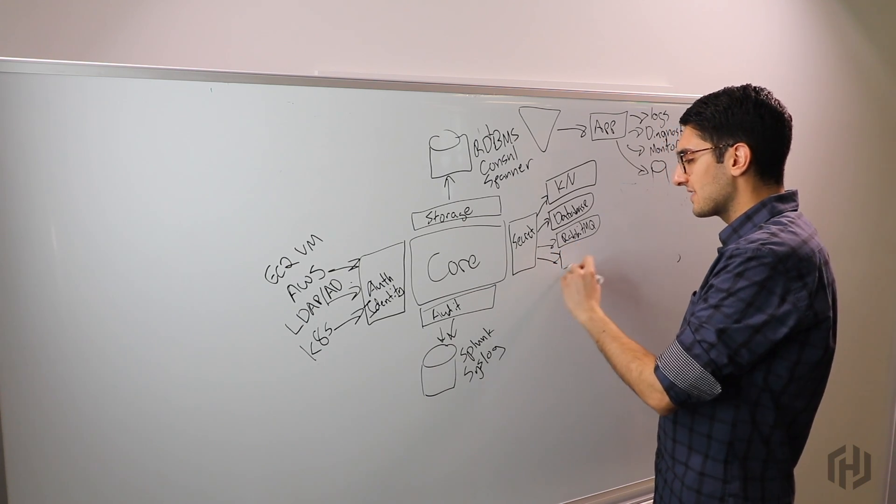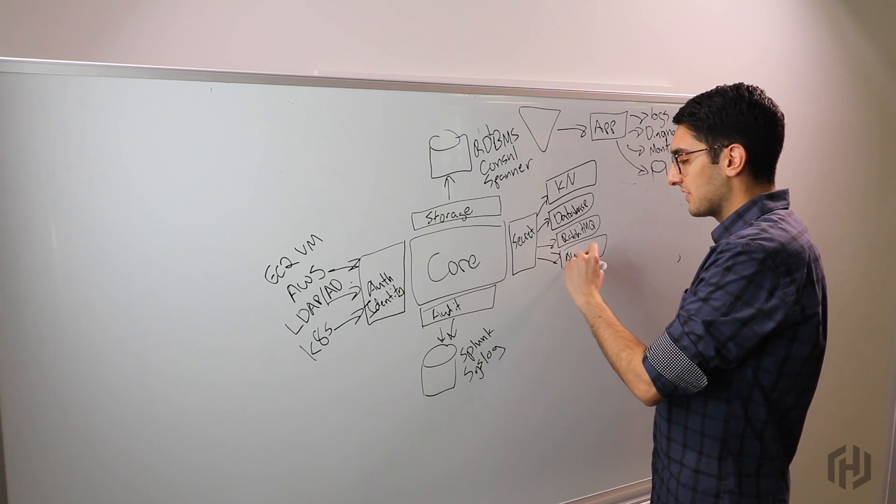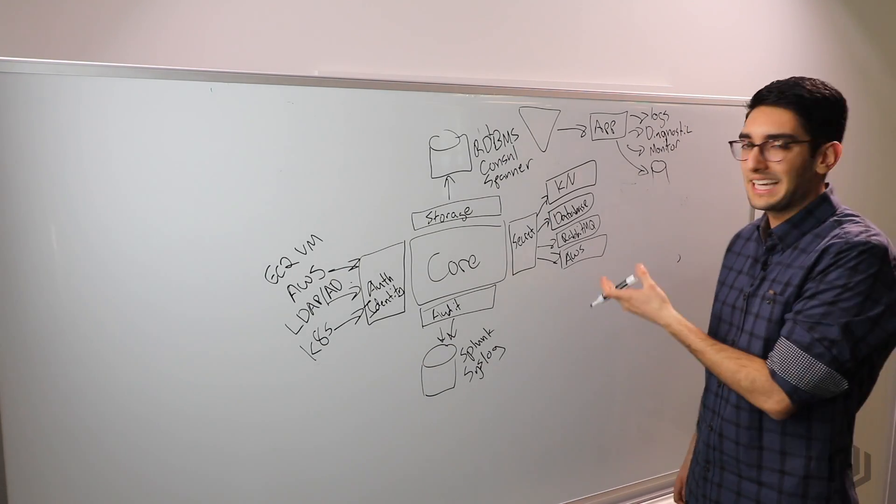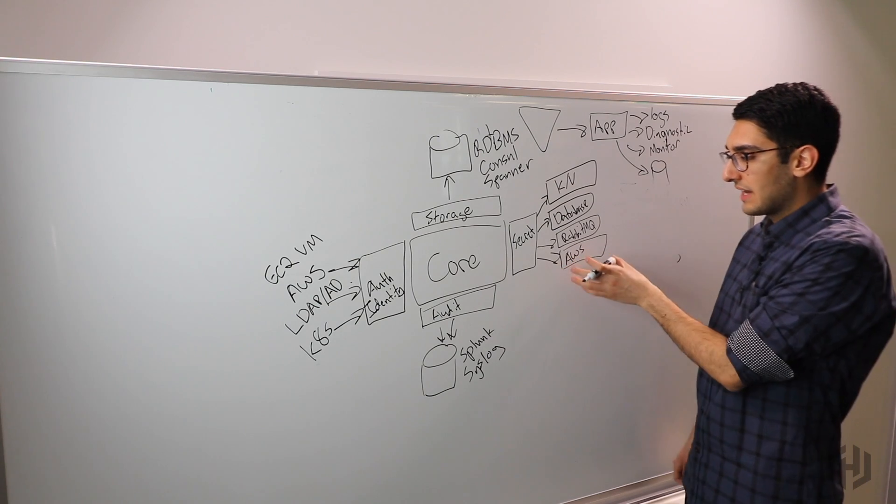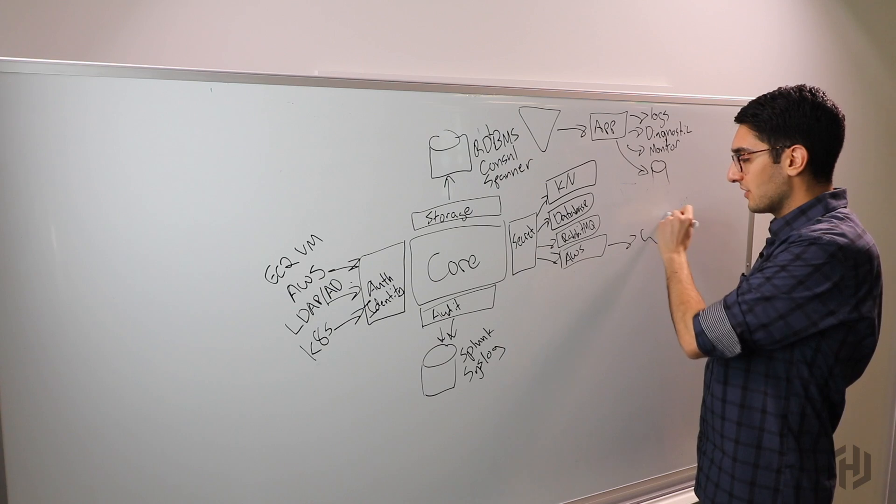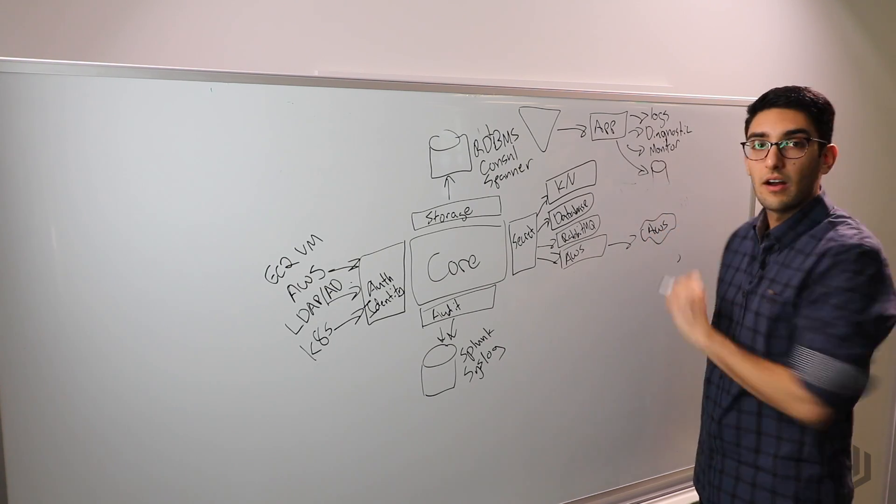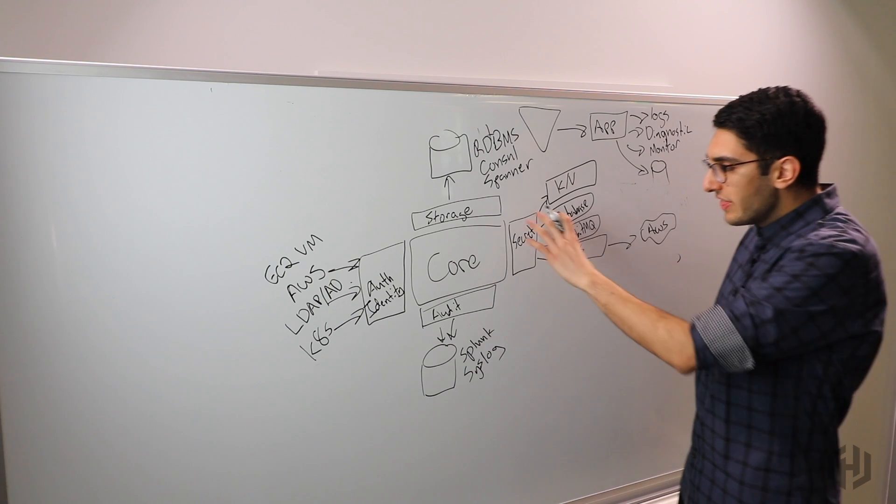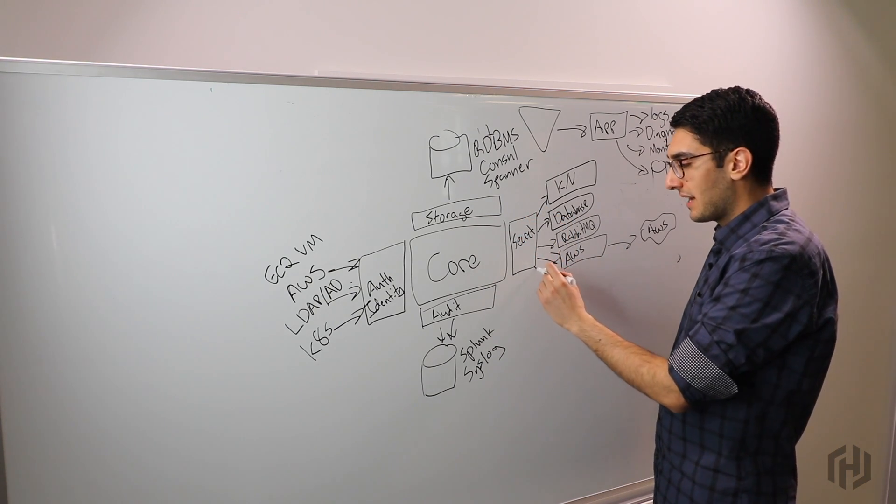You can even apply the same principle to something like AWS. We might have applications that need to read and write from S3, but we don't want to give them long-lived access to IAM. Instead, we define a role in our AWS backend and we'll dynamically generate short-lived credentials as needed. This extends that dynamic secret paradigm. This is an extension point that allows Vault to apply the same principle to many different things.